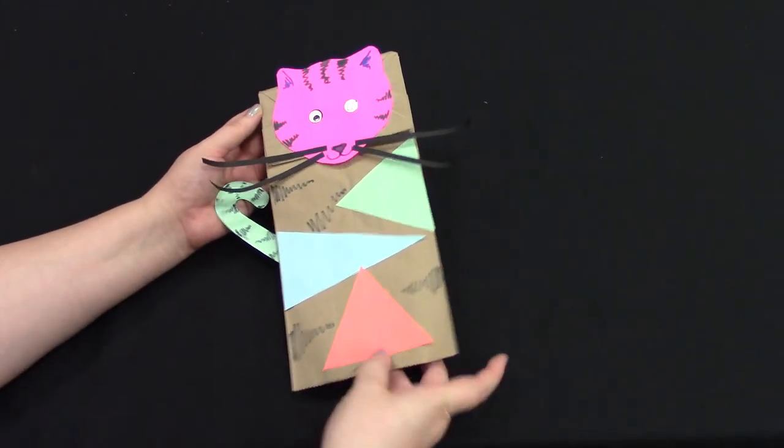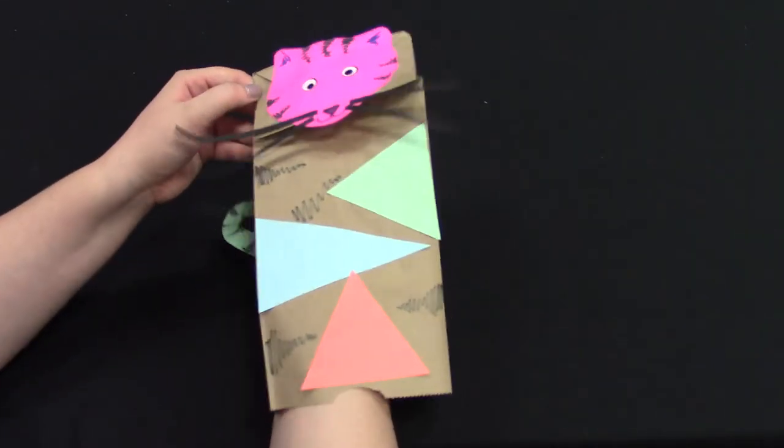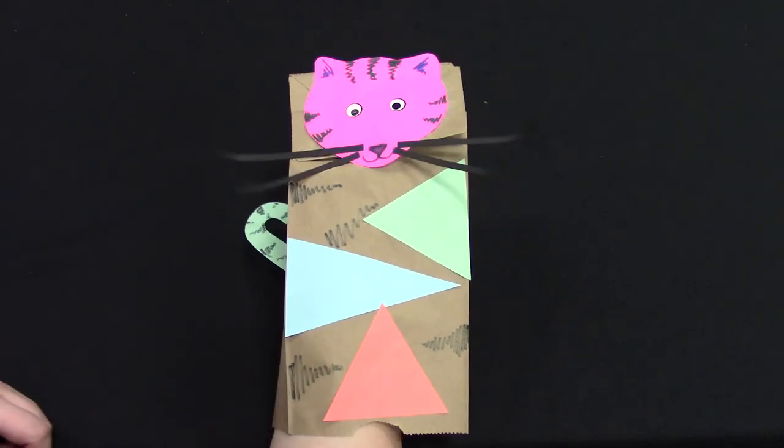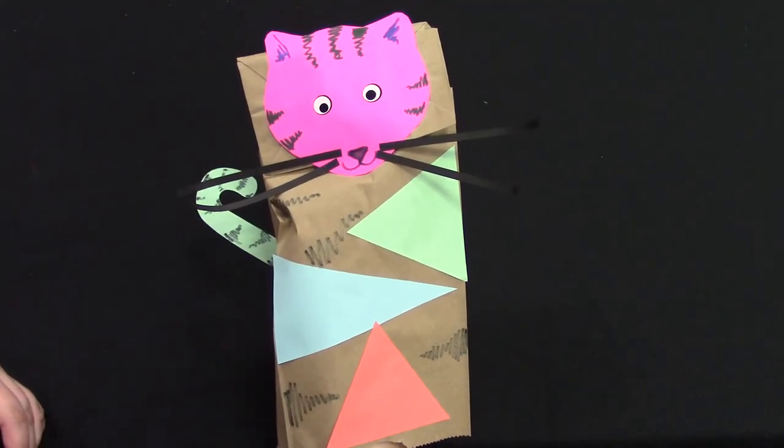In order to use it as a puppet, you're going to open up the bottom, put your hand inside, and you can make him talk just like that. Tiger, get out of that teapot. Make me!